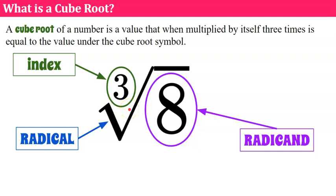So in a square root, your index is invisible. You could write a two there for square root, but it's best practice not to write that. You will never see the two there, maybe on a calculator to distinguish it, but it's there — it's what it means.